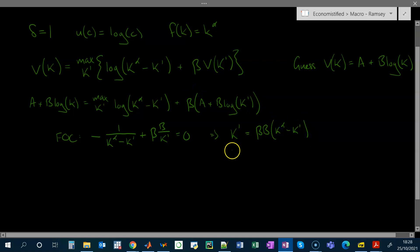And then rearranging, adding beta b times k prime to both sides, and then dividing by 1 plus beta b, we get this. So this is our optimal choice of capital, given our guess for v. We don't know if our guess is correct yet, but if it is, this is what our optimal choice of capital will look like. And as you can see, it's a constant fraction of output.